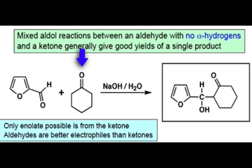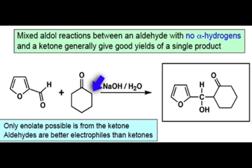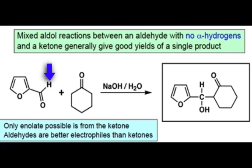The ketone, however, has four alpha hydrogens that can all be deprotonated. Another advantage in this reaction is that an aldehyde is more electrophilic than a ketone due to less steric hindrance.